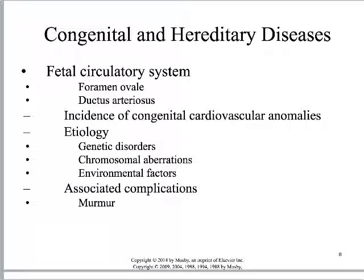In order to understand congenital and hereditary diseases — which are quite frequent in infants, especially premature infants — we need to understand differences in the fetal circulatory system. One of the primary differences is that the heart is actually not doing much work in utero. There is a point of communication called the foramen ovale which allows for circulation into the heart, and there is the ductus arteriosus which allows blood to basically bypass the heart's atrium and ventricles. In the incidence of premature birth, those openings may not have fully closed.